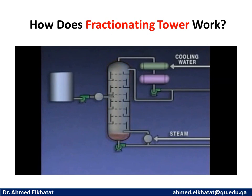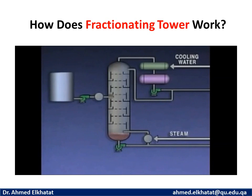The vapors from the boiling liquid, which primarily contain the lighter components in the feed, rise in the tower. The remaining liquid, which consists primarily of the heavier components in the feed, moves down the tower and collects at the bottom.